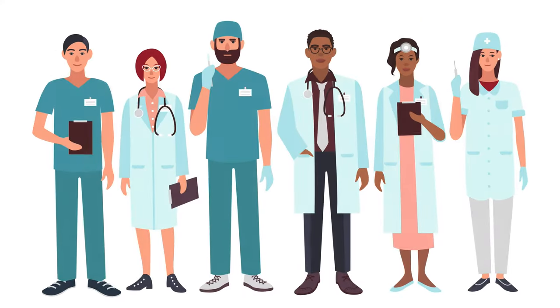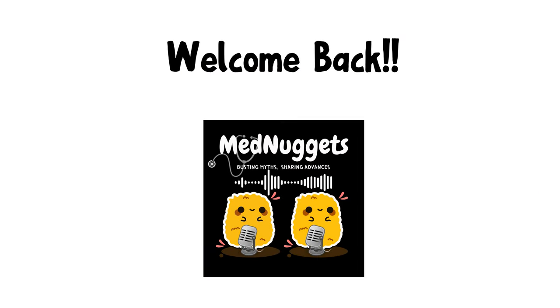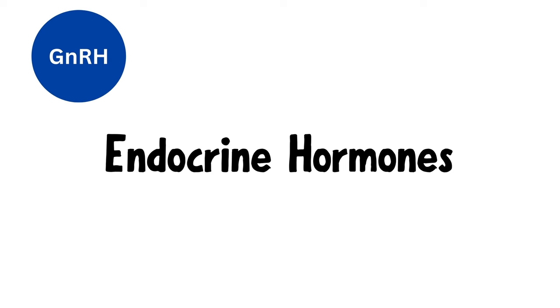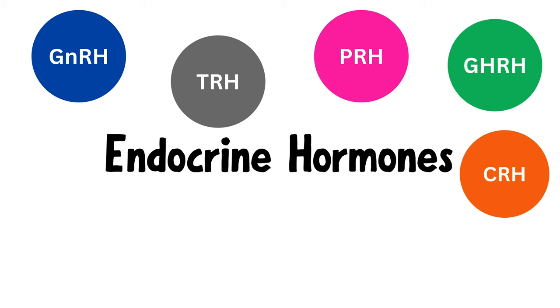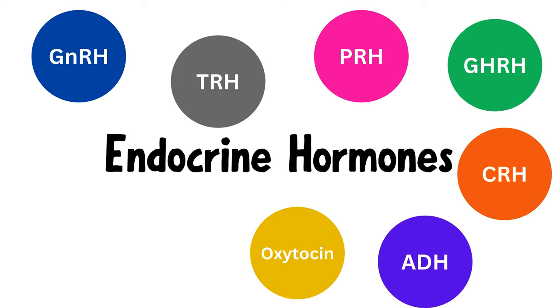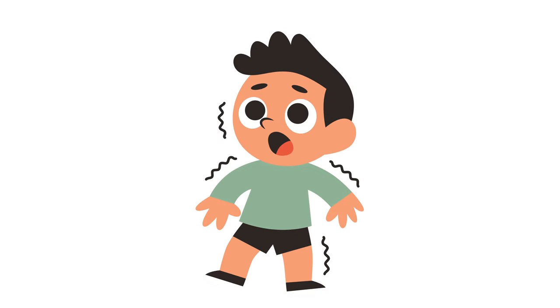Hi everyone, welcome back to Learn with Med Nuggets. In today's video, we are going to talk about the endocrine hormones GnRH, TRH, PRH, GHRH, CRH, ADH, oxytocin, dopamine and MSH. I know it's a long list of hormones, so let's start with the first hormone, GnRH.